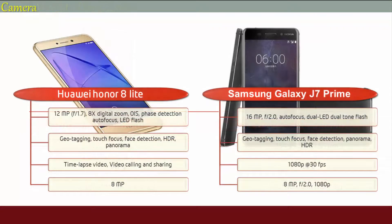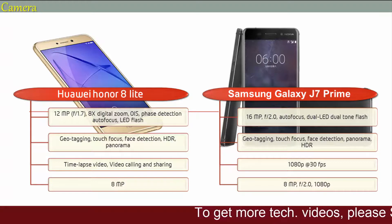About the camera, the Honor 8 Lite comes with a 12-megapixel primary camera with f/1.7 aperture, 8x digital zoom, optical image stabilizer, phase detection autofocus, and a single LED flash. It also has time-lapse video, video calling and sharing features. The Honor 8 Lite also comes with an 8-megapixel secondary camera for selfies.